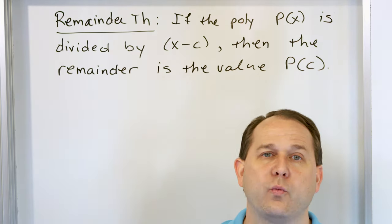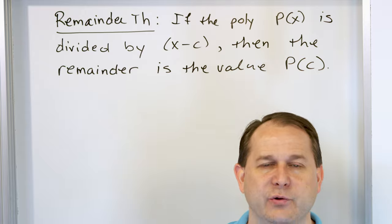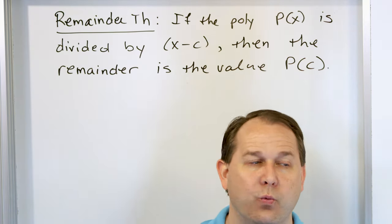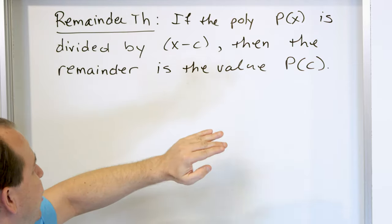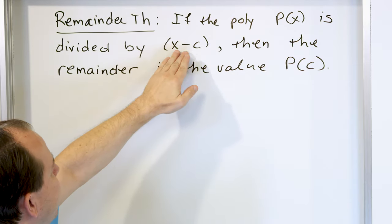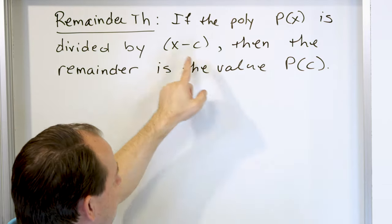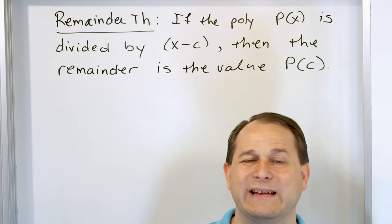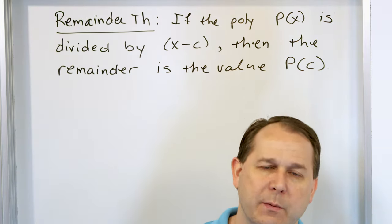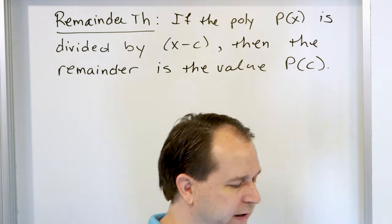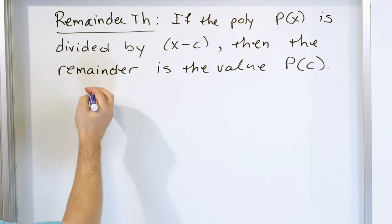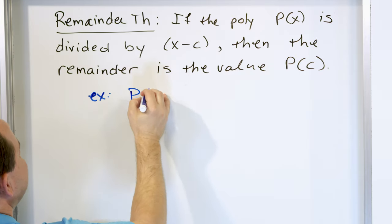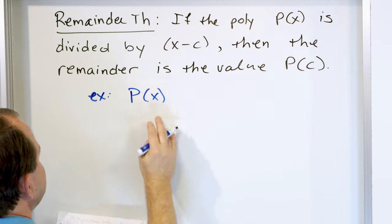What I'm also saying is there's another way to find the value of that polynomial evaluated at that number, and that way is to divide the polynomial by x minus that number, crank through it, and figure out what the remainder is at the end. The remainder is going to be the value p evaluated at c. So for an example — I always like to give examples that make everything easier — let's say we have some polynomial.